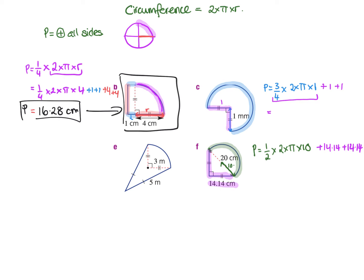Here in this one in the corner, they tell you there are 90 degrees there. So when we're just finding the curved bit, it's actually a quarter of the circle. So we've got perimeter equals a quarter times the formula, which is 2 times pi times the radius. They've told me the radius is 3. But remember, we're going to have to add these two sides on, which are two 5s. Then you'll get the answer.